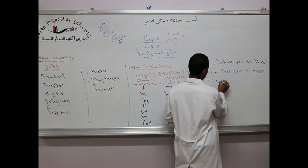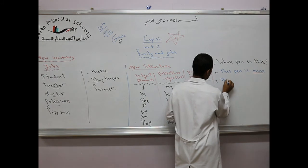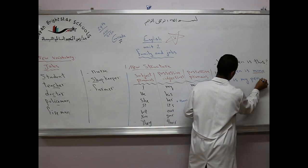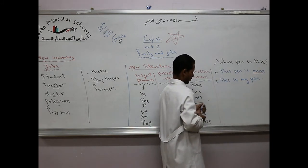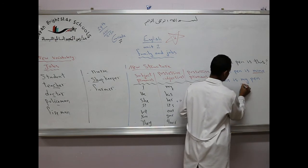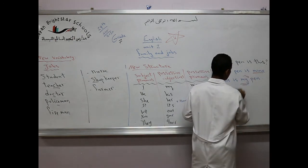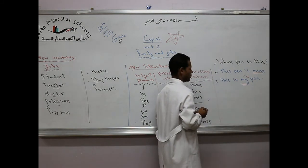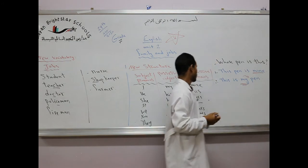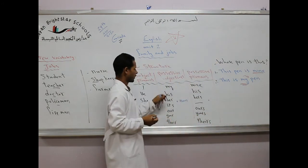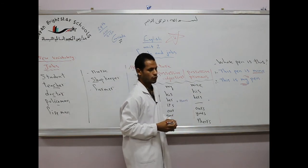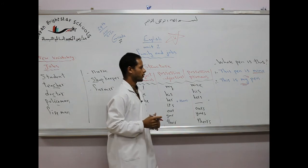It doesn't follow by any noun. And we can say, this is my pen. And the next one, my, we use my before the noun, it followed by the noun pen.